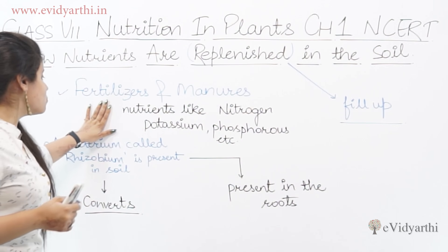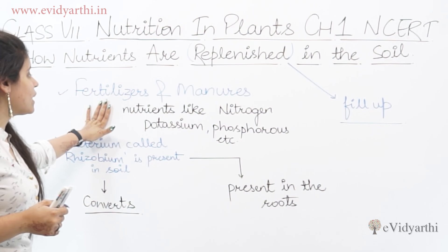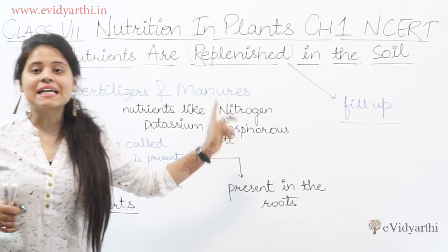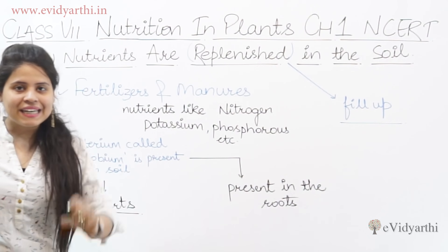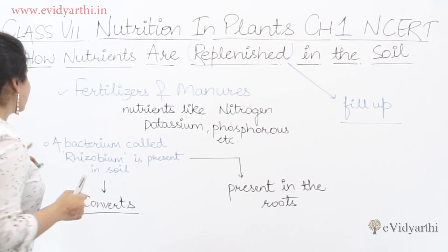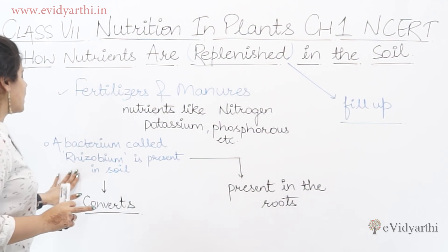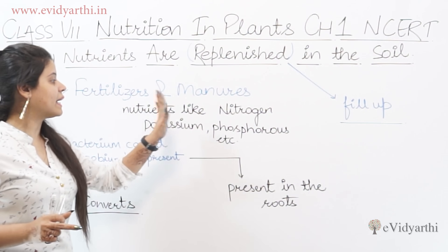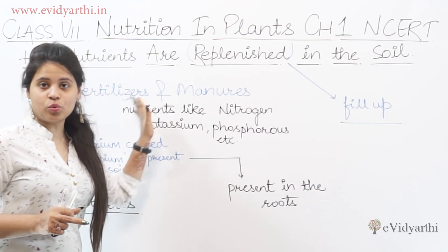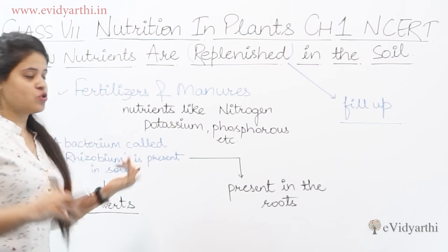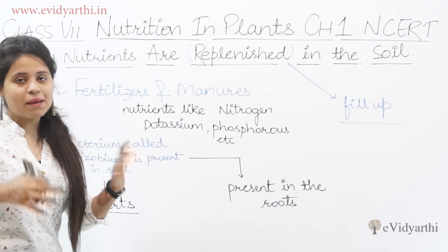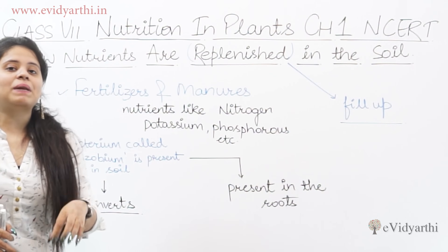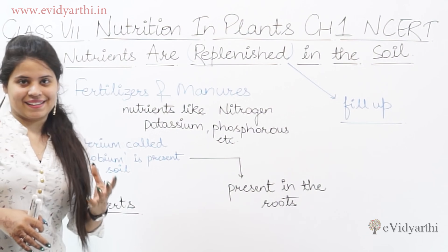Now, when we have fertilizers containing nutrients like nitrogen or potassium, plants cannot consume them directly. So in the soil, there is a bacterium called rhizobium. What it does is convert these nutrients — like nitrogen and potassium — into a form that plants can consume.